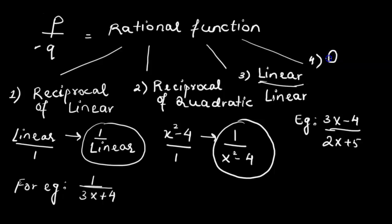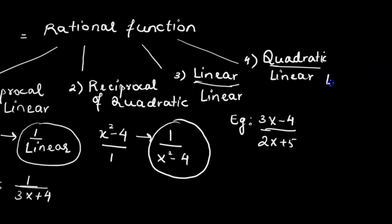The fourth type we would be taking up is the quadratic over linear function. An example for this is a quadratic expression in the numerator and a linear expression as a denominator. This forms a fraction, and it is called the quadratic over linear type of rational function.